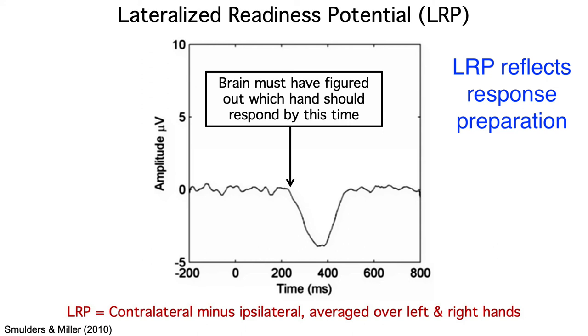How could the voltage be more negative over the contralateral hemisphere if the brain hadn't yet begun to decide which hand to prepare? The onset latency of the LRP is therefore a great index of the amount of time required to determine which motor response is appropriate for a given stimulus.